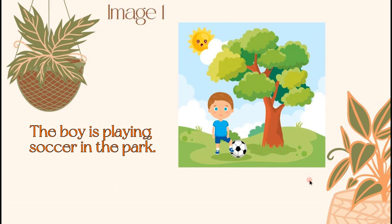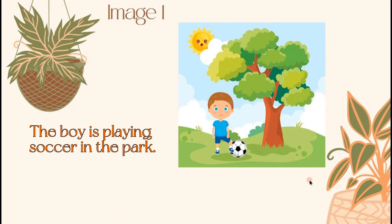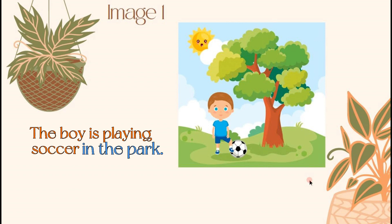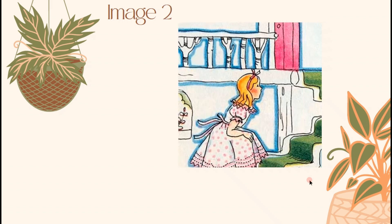I will ask some questions first. Who is playing in the park? Obviously, that's the boy. Next, what is the boy doing? The boy was playing soccer. Lastly, where was the boy playing soccer? In the park, of course. Next, we have Image 2 — kindly describe what is in the image. The girl is walking upstairs.